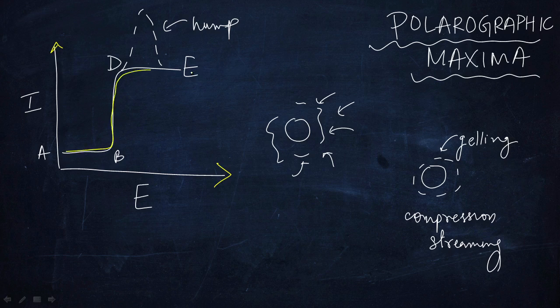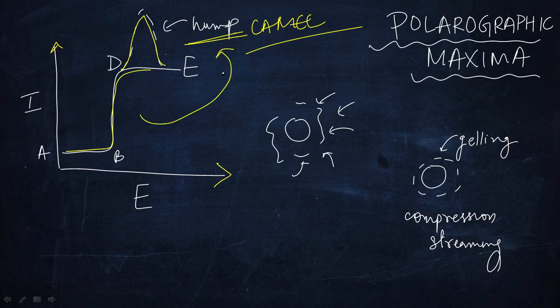It should follow the path A-B-D, but sometimes it becomes like a camel hump. So this hump can be in multiples of the diffusion current.